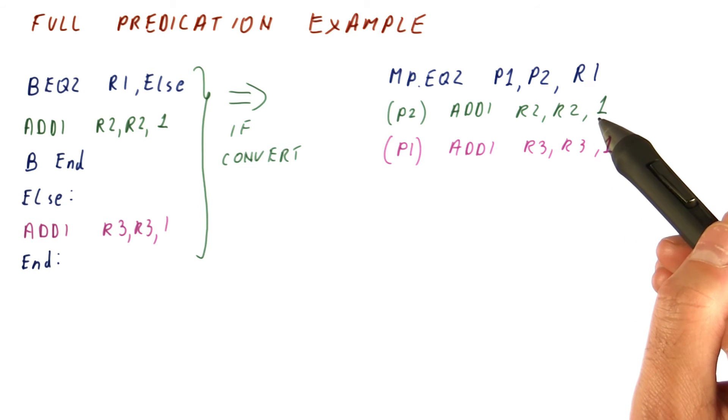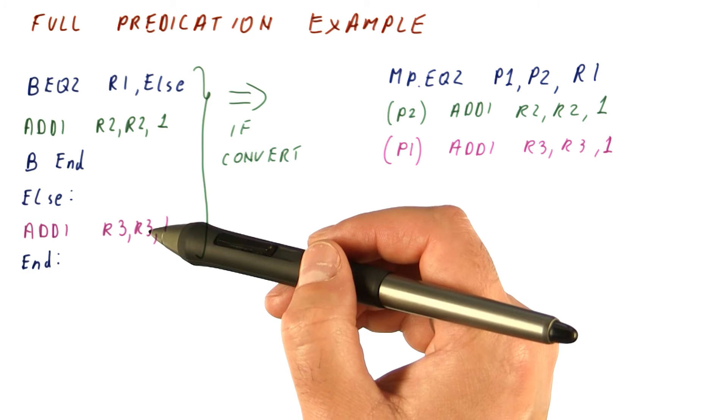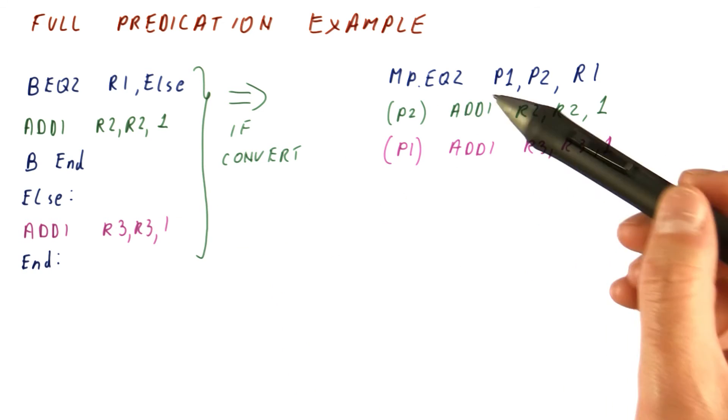And that means that first of all we can use the same registers that we used before. We don't need the additional R4 and R5 that we had in the previous example. And second,